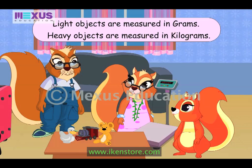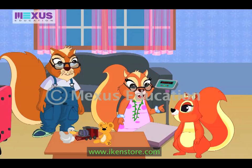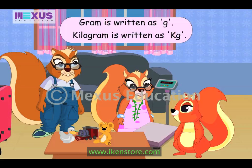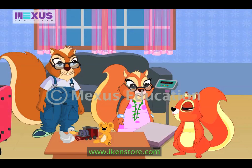We use grams to weigh a light object, such as a toy engine. But we weigh heavy objects such as bags in kilograms. And, Amber, when we write an object's weight, we represent grams as g and kilograms as kg.